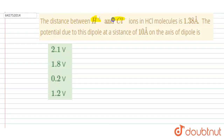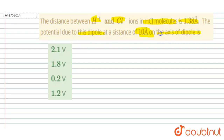Hello everyone. The distance between H+ and Cl- in the HCl molecule is given. We need to find the potential due to this dipole at a distance of 10 angstroms on the axis of the dipole.